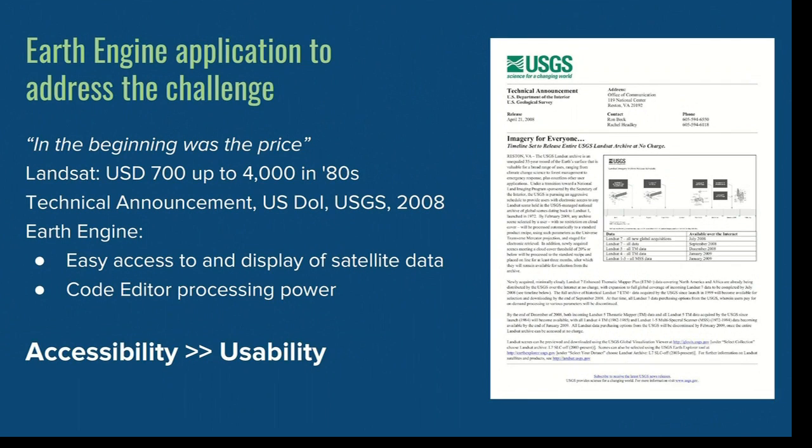Years ago, images were basically only for sale. In the beginning was the price — images were mostly, if not uniquely, for sale. Then one day the USGS came out with a small one-pager that basically changed the world, giving access to images to everybody. In a matter of a few months after the publication of this document, they released the whole archive.